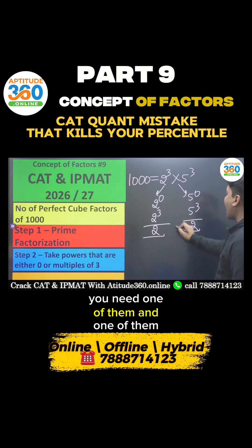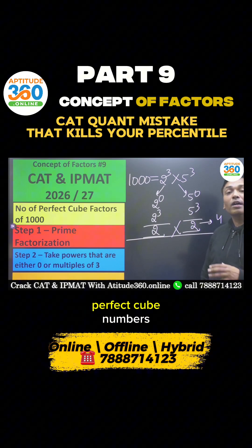And hence, how many factors of 1000 are perfect cube numbers? There are four such factors.